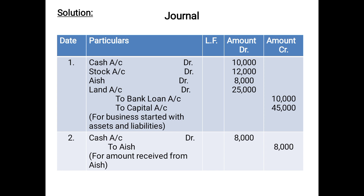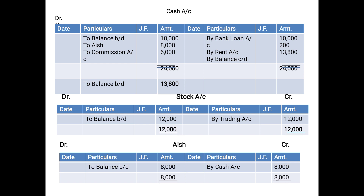For the next entry, you need to post in Cash Account and Ash Account. In Cash Account, you do not record the cash aspect — you record the credit aspect, which is Ash. Since Ash is being credited in the entry, it will be shown on the debit side of Cash Account as 'To Ash 8,000'. And while preparing the Ash Account, you record the debit aspect — Cash Account is being debited — so it will be posted on the credit side of Ash Account as 'By Cash Account 8,000'.